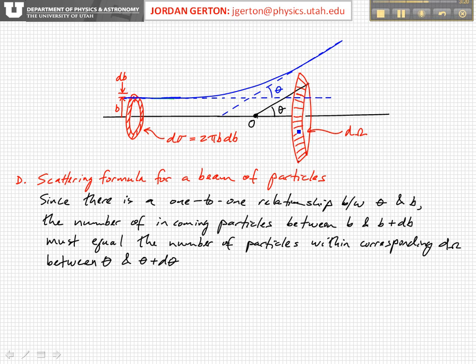So the particles which pass through from the beam which pass through that little annulus will scatter into a differential solid angle, d omega. And so again, the number of particles which pass through this annulus has to equal the number of particles per unit time which scatter into this differential solid angle, d omega.